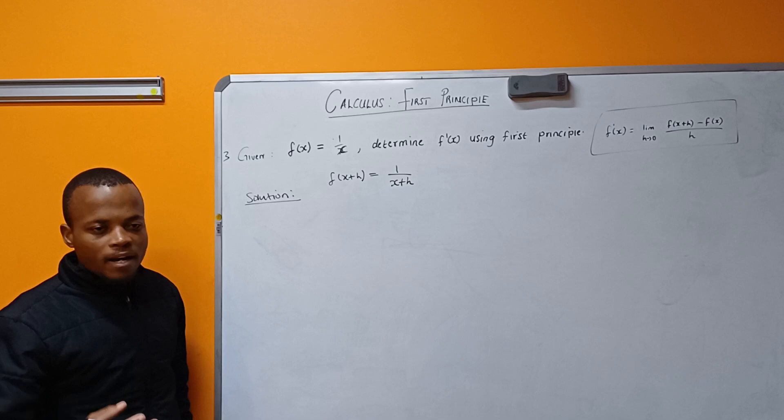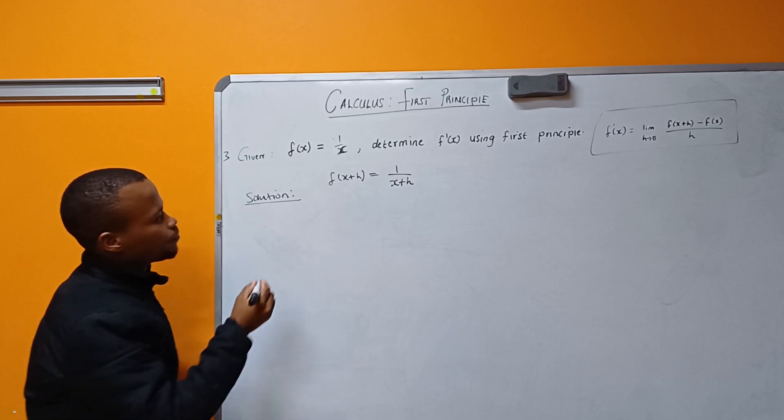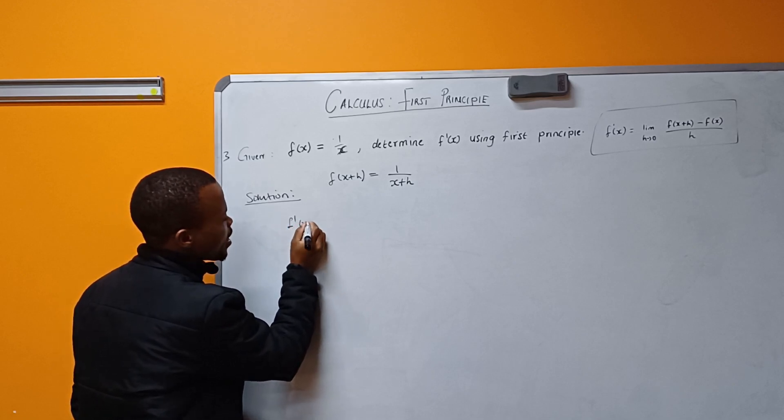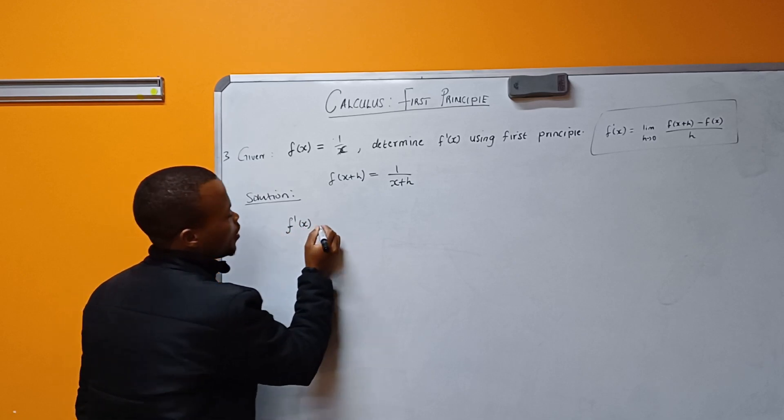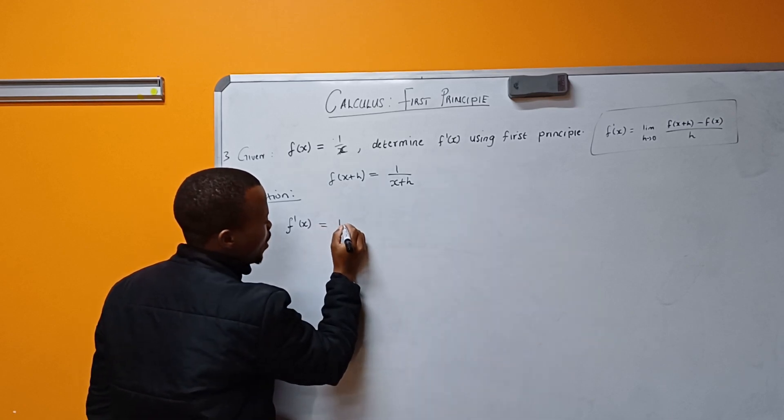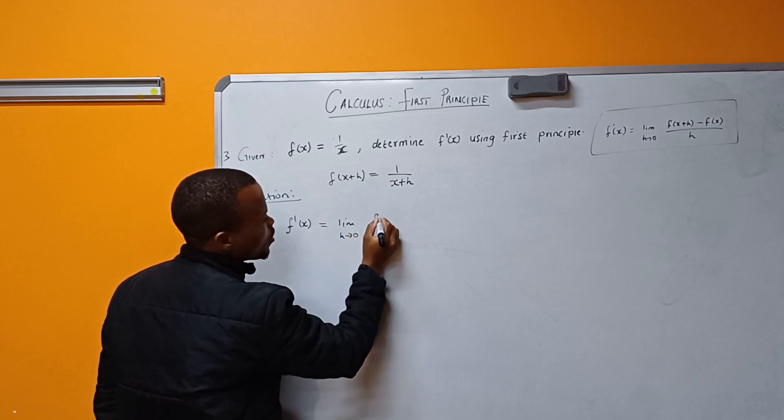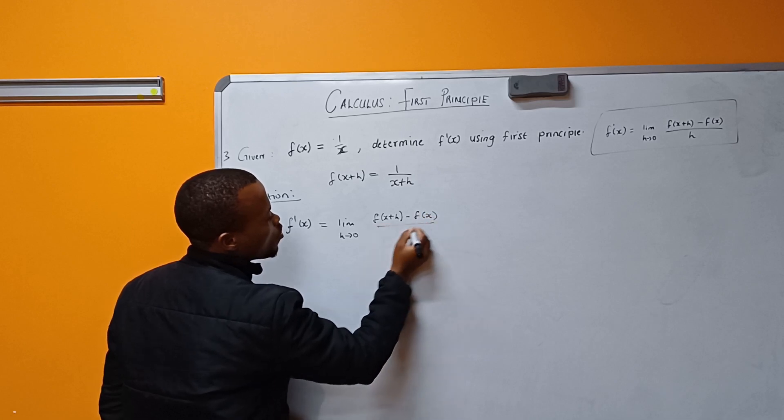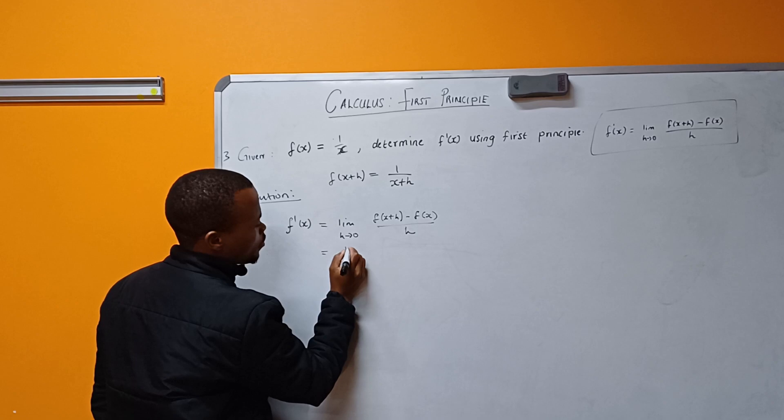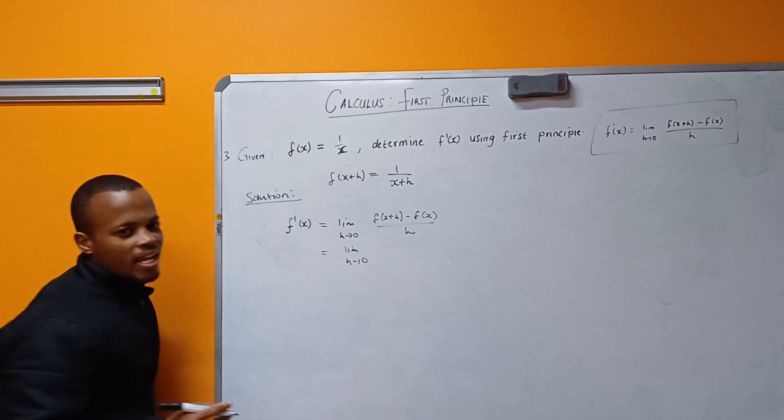f'(x) using first principle can be found by: limit as h tends to zero of [f(x+h) - f(x)]/h. I still continue with my limit as h approaches zero.